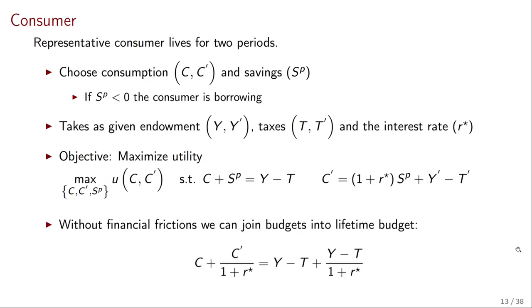Without any financial frictions, we can actually join the two budgets into a lifetime budget constraint. Where on the left hand side, we have the present value of consumption. And on the right hand side, we have the present value of income, which we also call lifetime wealth. So this side here is what we call lifetime wealth.